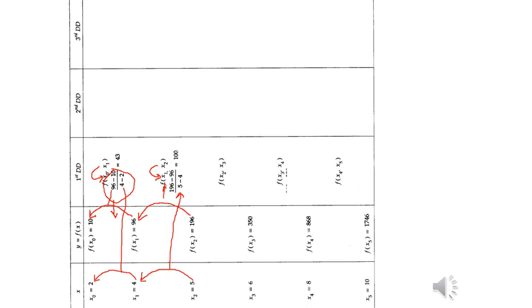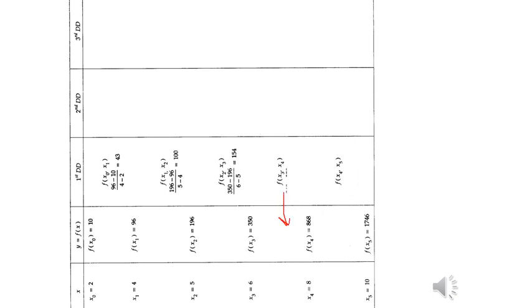Next, how do we find this entry? Go to its previous column and subtract this value minus its preceding value, that is 350 minus 196 in the numerator divided by x3 minus x2. Similarly, for the next entry, always subtract the value minus its preceding value, then in the denominator we have x4 minus x3, and the last entry is given similarly.